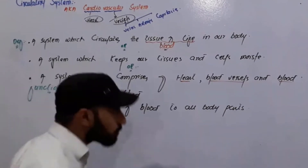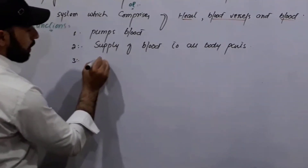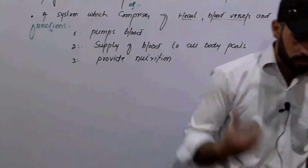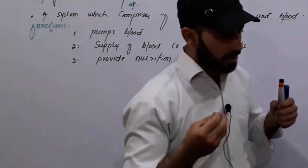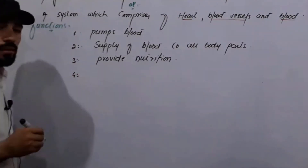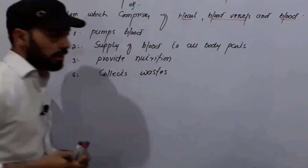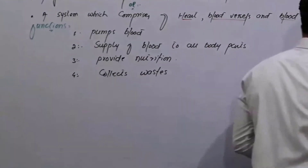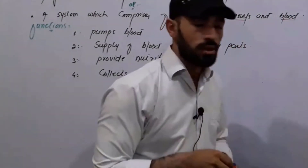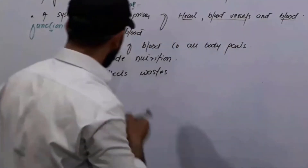To keep the tissues and cells moist is another function. The next important function is that this system is responsible for providing nutrition — our tissues and cells need oxygen, vitamins, proteins, and many other components, all of which are provided by the cardiovascular system. The system also collects waste substances. Respiratory reactions in tissues produce waste substances that are dangerous if kept there, and the cardiovascular system draws them away.